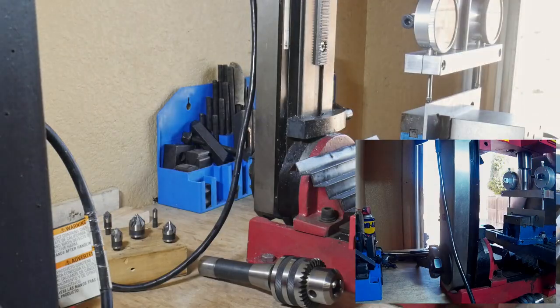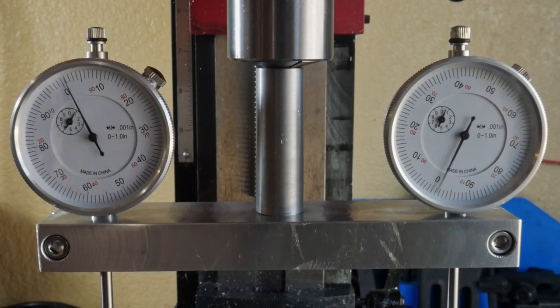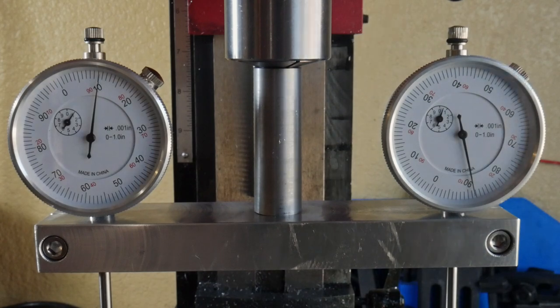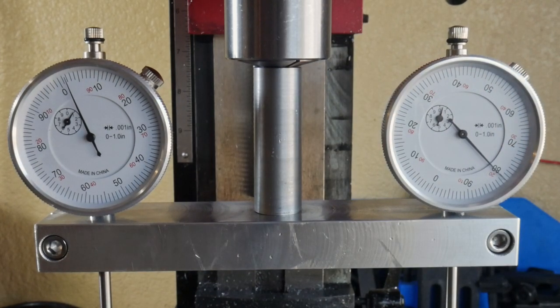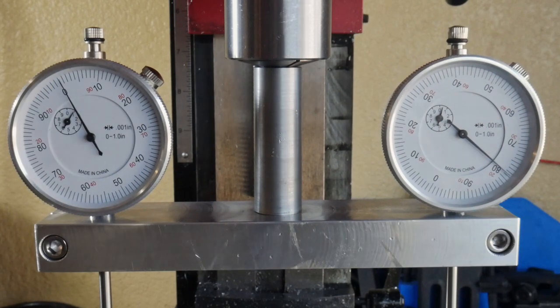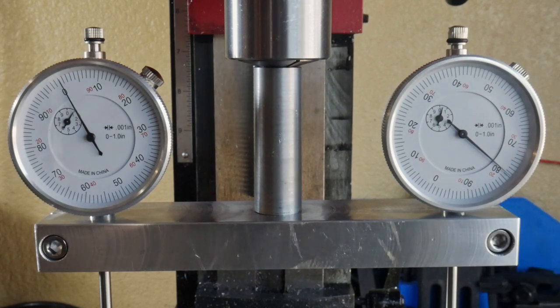So I loosened the nut on the back of the column and then snugged it back just a little bit, gave a few hammer blows to the top of the column and you can see that I am now out of tram by about ten thousandths of an inch.